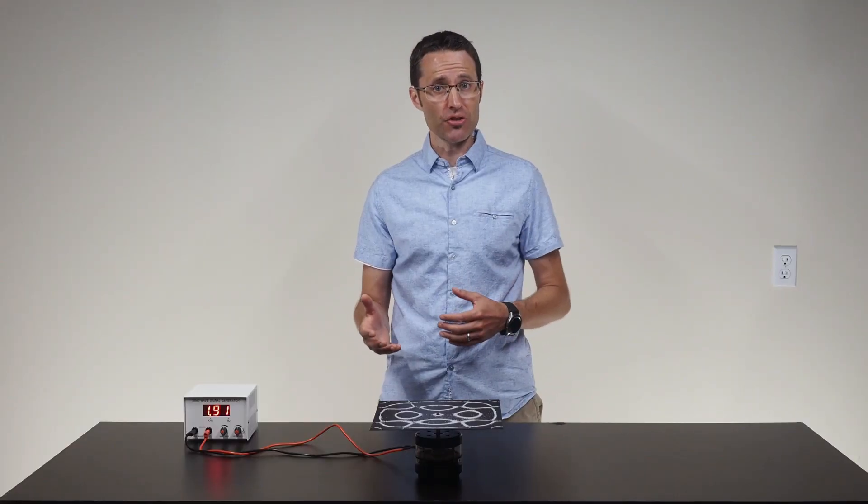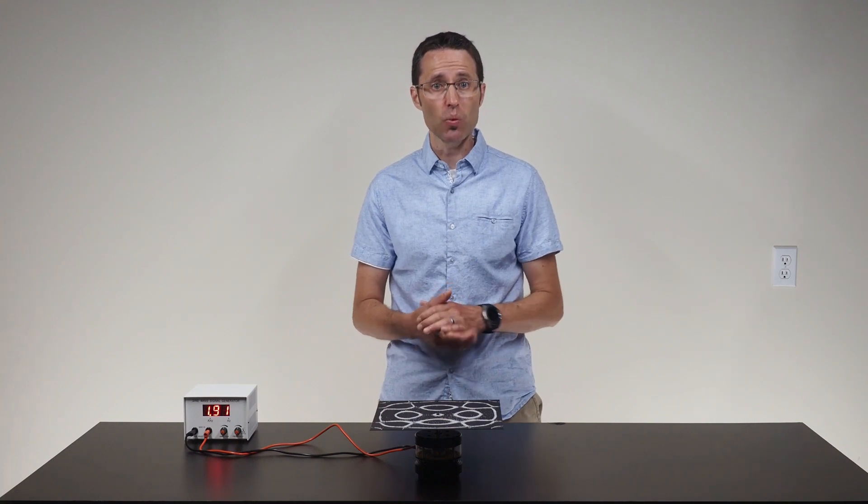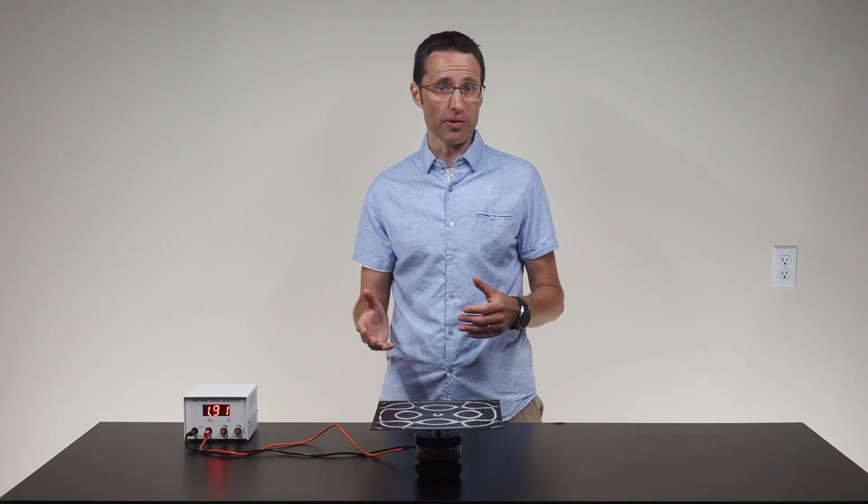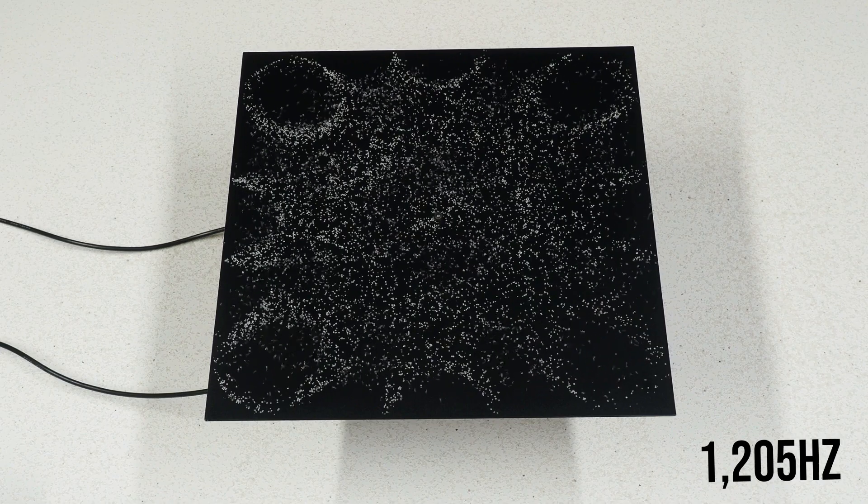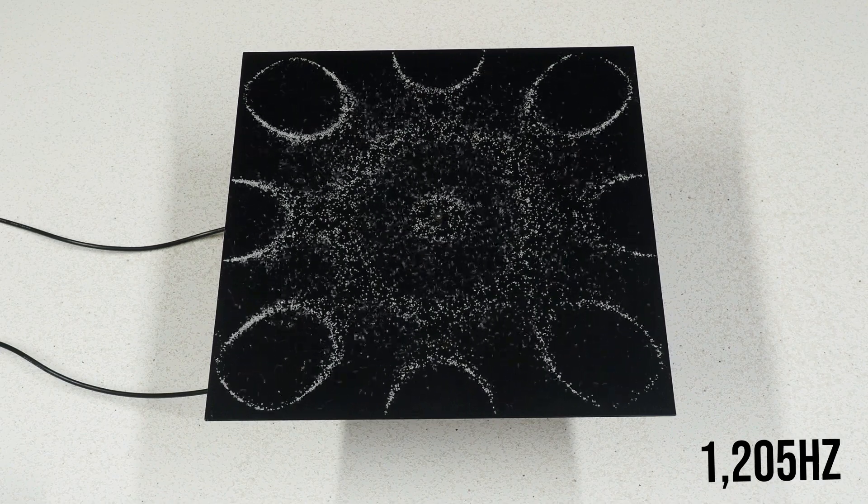Just like a stretched string, only specific frequencies of disturbance will create standing waves in the metal surface. If standing waves are created in the two-dimensional surface, there should be anti-nodes.